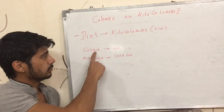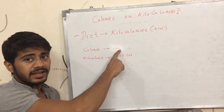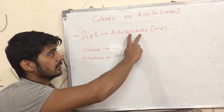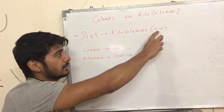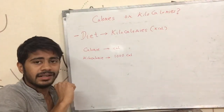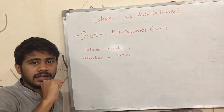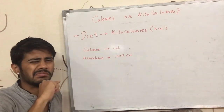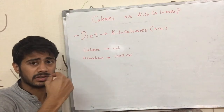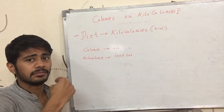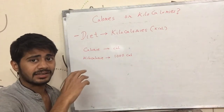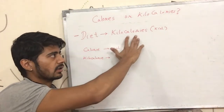The small calorie is represented as CAL in short form, and the kilocalorie, the big calorie, is represented as KCAL. But even in my videos or anywhere on the internet where you find someone talking about human food and writing CAL, just understand that they are talking about kilocalories.